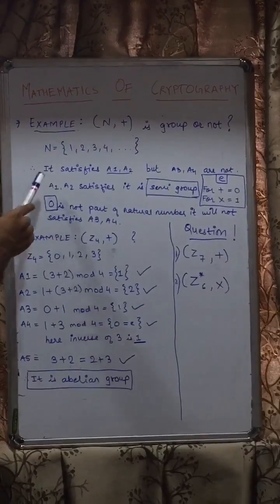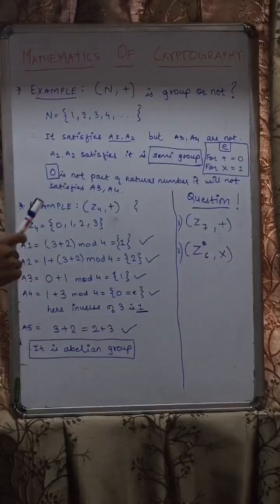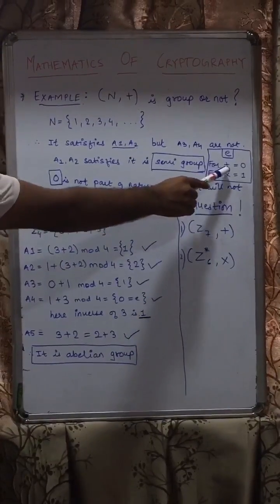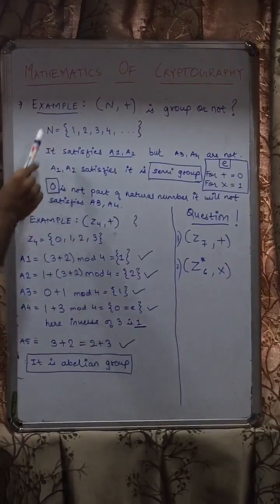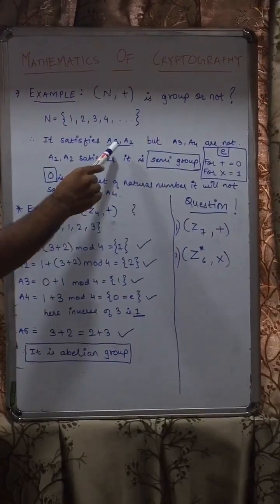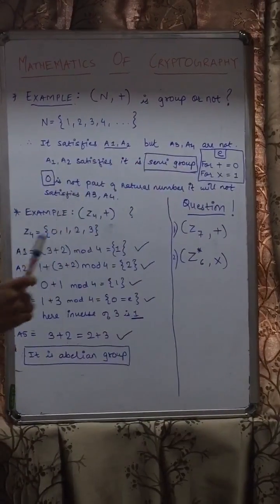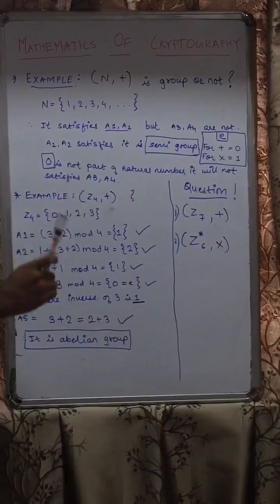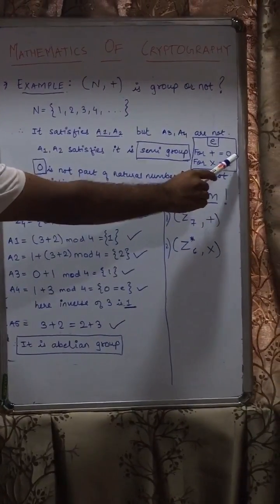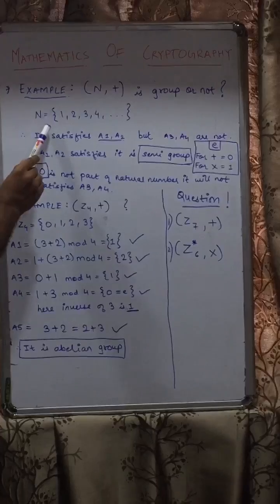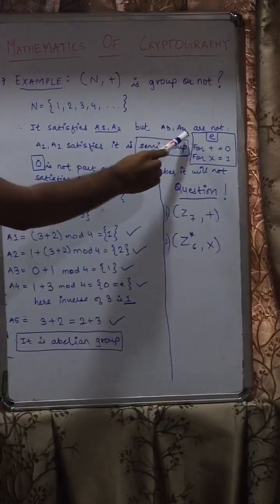Now before explaining how many properties this set satisfies, I want to tell you that the identity element e for addition is zero and for multiplication it is 1. Now in this particular example it satisfies A1 and A2 property but not A3 and A4. Why? Because A3 and A4 properties consist of identity element, and for addition the identity element is zero, but zero is not in our natural set.